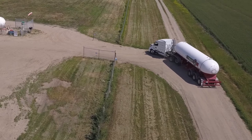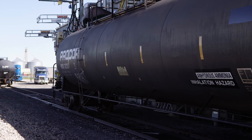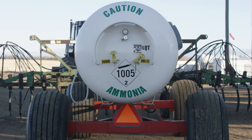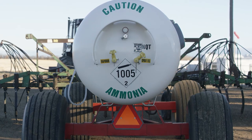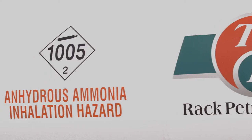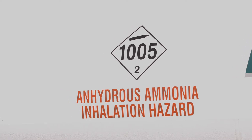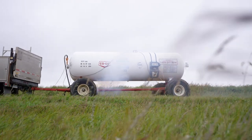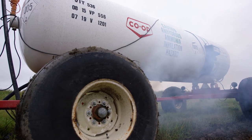Anhydrous ammonia is transported in liquid form under pressure in different sized pressure vessels. It can be transported by rail car, road transport truck, transport delivery units, or in nurse wagons. All vessels containing anhydrous ammonia in Canada will display a white placard with the number 1005 in the middle, a gas cylinder on top, and the number 2 at the bottom. The words 'anhydrous ammonia inhalation hazard' must also be found on the vessels. Before approaching a vessel or incident, be sure to identify the product you're dealing with.